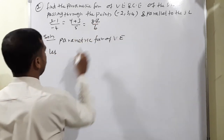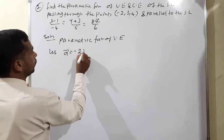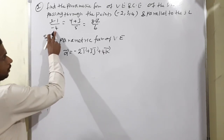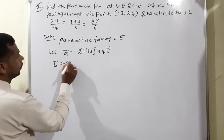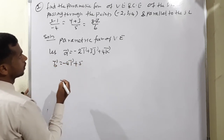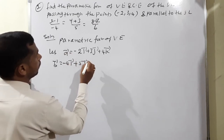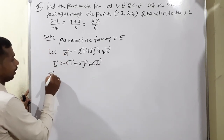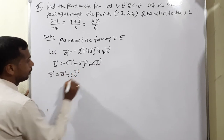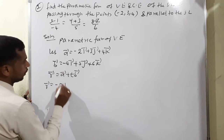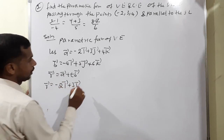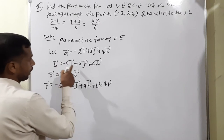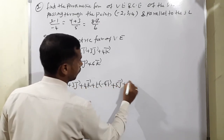Solution. Let the point a vector equal negative 2i plus 3j plus 4k. The parallel direction, the denominator part, is b vector equals negative 4i plus 5j plus 6k. The formula for parametric form of vector equation is r vector equals a plus t·b. Therefore r equals (negative 2i plus 3j plus 4k) plus t times (negative 4i plus 5j plus 6k).